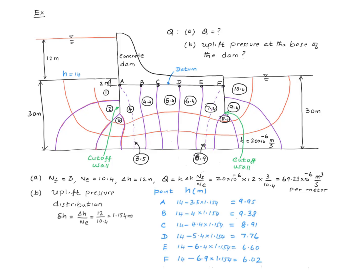Little delta H is calculated to be 1.154 — that's the drop between two adjacent equipotential lines. The total head on this upstream line, taking the base as the datum, is: pressure head = 12, elevation head = 2, and therefore the total head works out to be 14 meters.